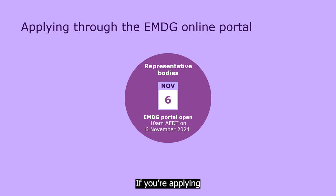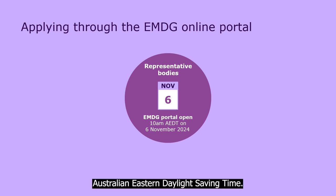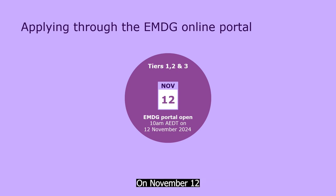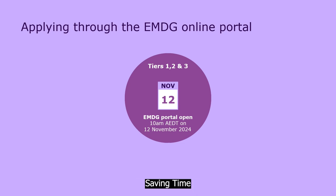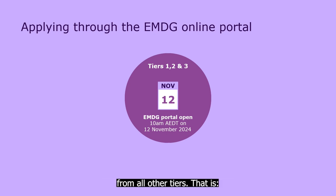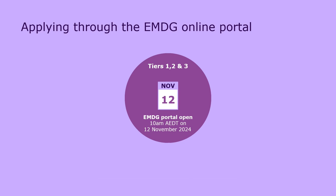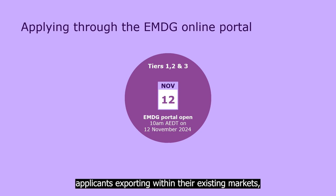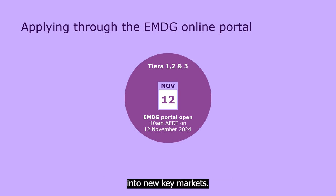If you're applying as a representative body, your tier opens for applications on November 6th at 10am Australian Eastern Daylight Saving Time. On November 12th at 10am Australian Eastern Daylight Saving Time, the portal will open for applications from all other tiers — that is, Tier 1 ready-to-export applicants, Tier 2 applicants exporting within their existing markets, and Tier 3 applicants expanding their exports into new key markets.